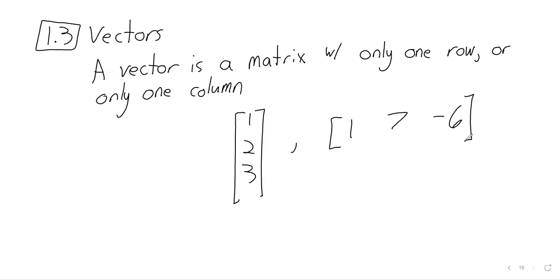So these vectors have the names you might expect. If a vector looks like a column, it's called a column vector. If a vector looks like a row, it's called a row vector.